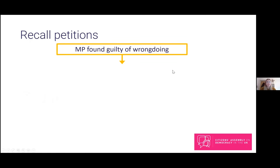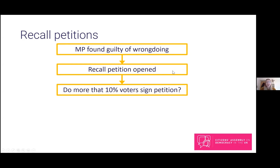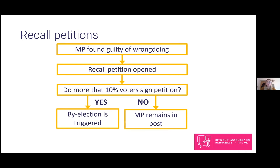Recall is a mechanism that allows voters to trigger an election if their MP has been given a prison sentence or found to have seriously broken parliamentary rules. If that happens, a petition is opened that voters in that constituency can sign. If 10% of people registered to vote in that area sign the petition, then an election is held. If they don't reach that threshold, the MP remains in post. There have been three recall petitions in the UK since it was introduced, and two of those have been successful.